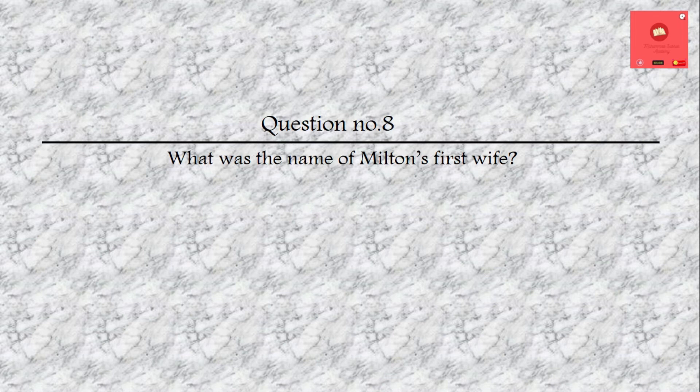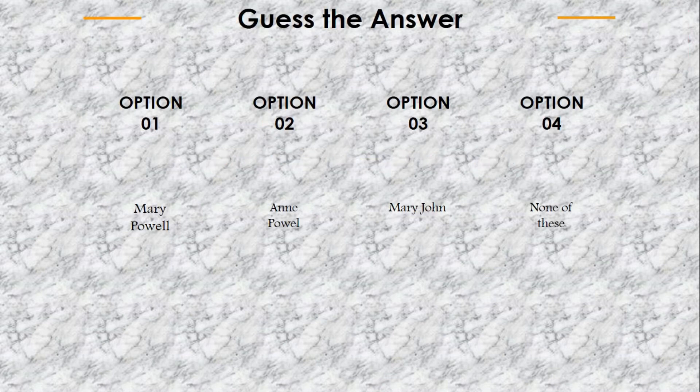Question number 8: What was the name of Milton's first wife? Options are: Mary Powell, Annie Powell, Mary John, or none of the above. The answer is Mary Powell.